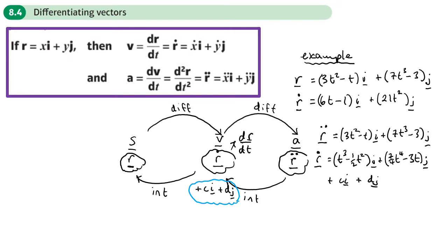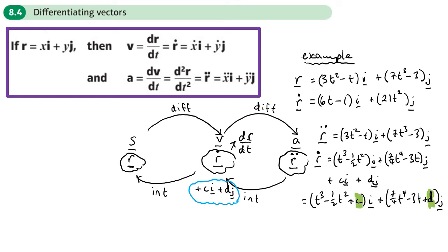There are two parts to the constant of integration, so we can write our answer as (t³ − ½t² + C)i + (7/4·t⁴ − 3t + D)j. Normally there would be something in the question that allows us to work out what those constants are, before we might integrate again to find a displacement.